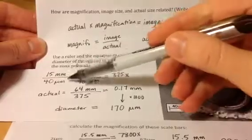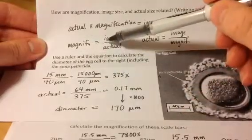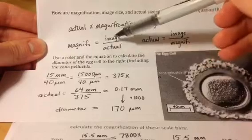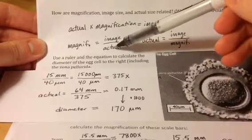Why did I set it up like this? Well, I'm going back to my equation up here. The magnification is equal to the image size over the actual size.